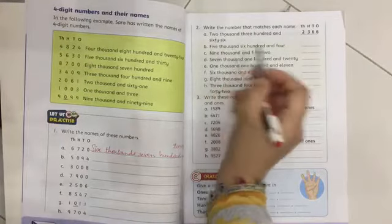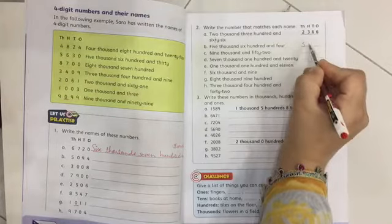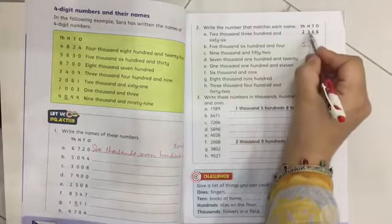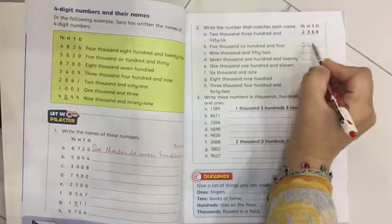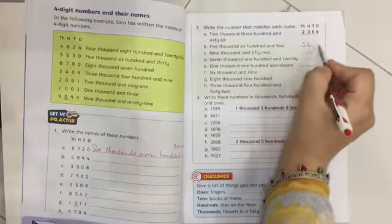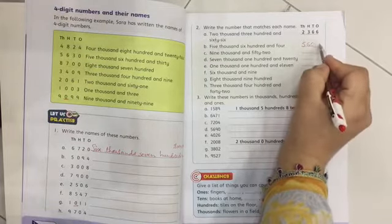5,000. TH, thousands place. 5, 600. 6 hundreds place. 4 means that it's tens place. Tens place. 4.